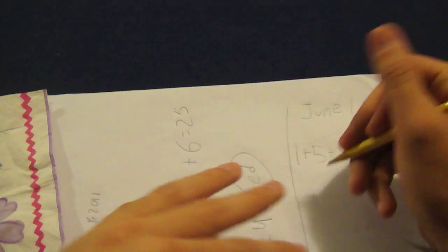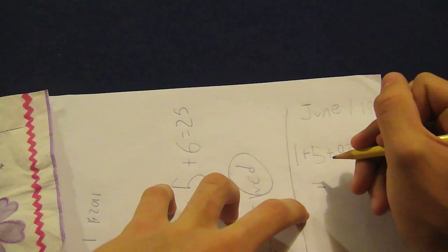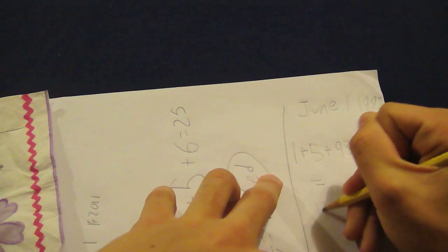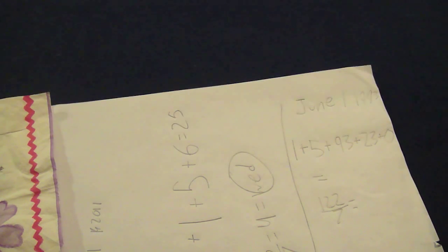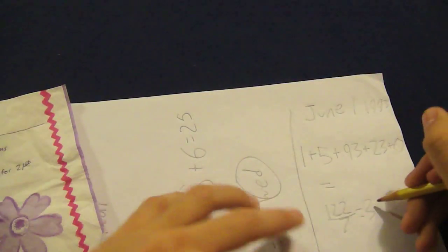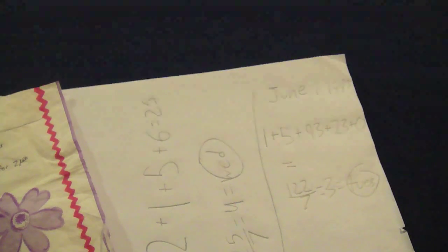So when you add that all up and divide it by seven, you get, let's see, add this all up, you get 122. Divide that by seven. It's a little tougher in your head, but you get, the remainder will be three. And three, according to the chart, three is Tuesday. Equals Tuesday. And that is also correct.